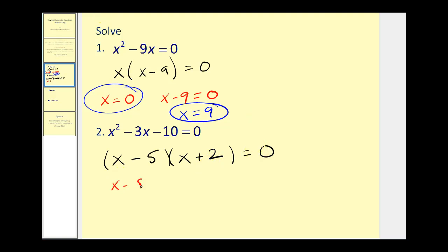Again, we have two expressions being multiplied together and their product is zero. So either x minus five must equal zero, or x plus two must equal zero. Now we solve these for x, add five to both sides, x equals five. Subtract two on both sides, x equals negative two. Let's go ahead and check this graphically as well.